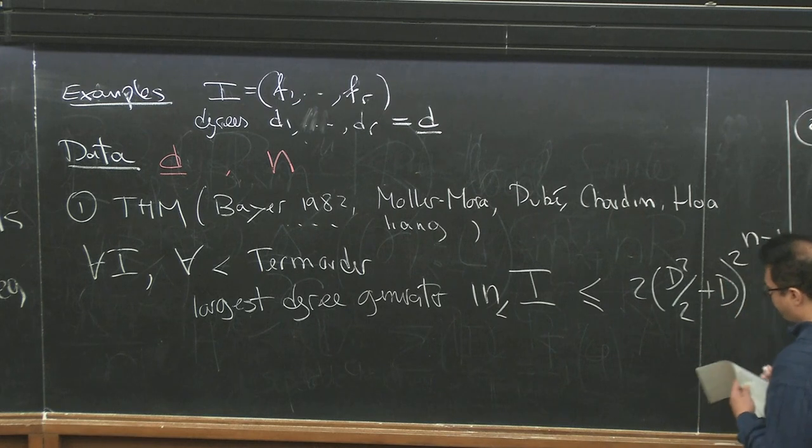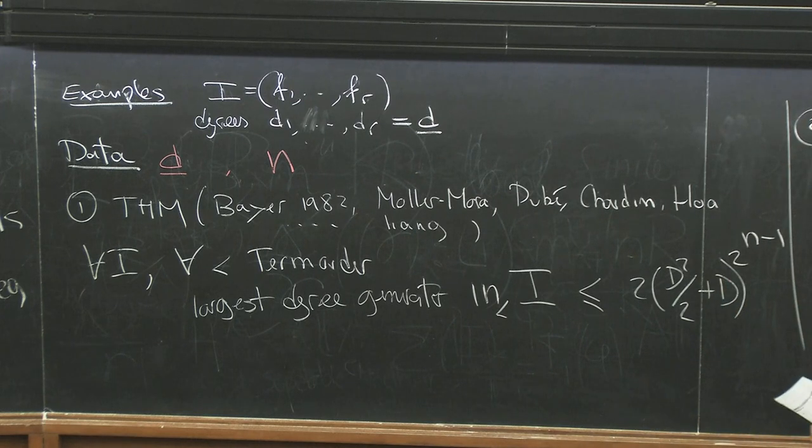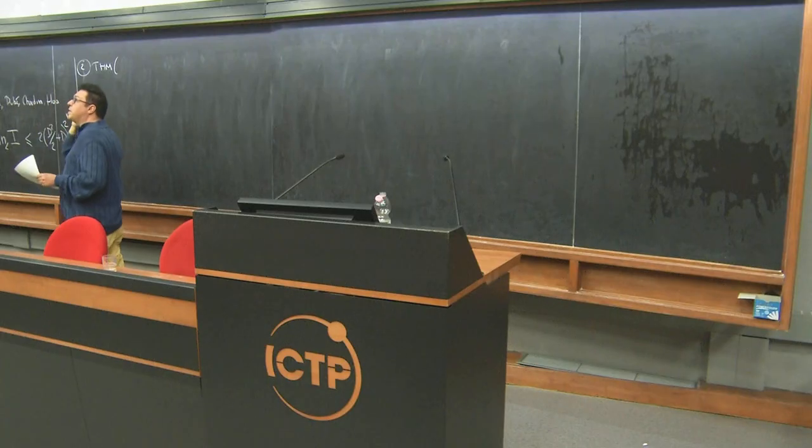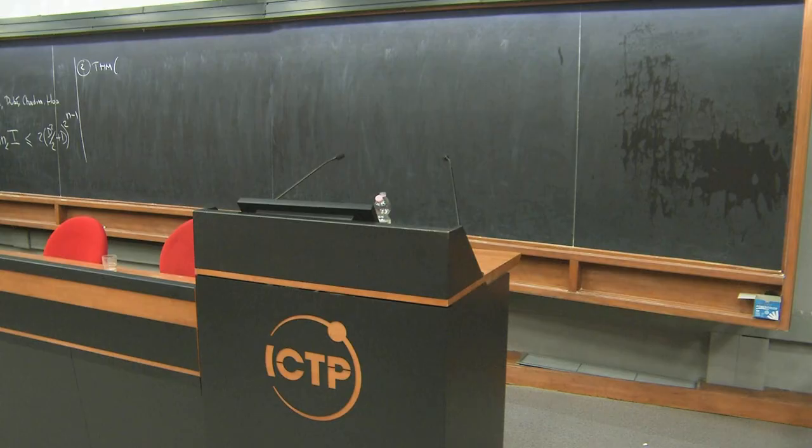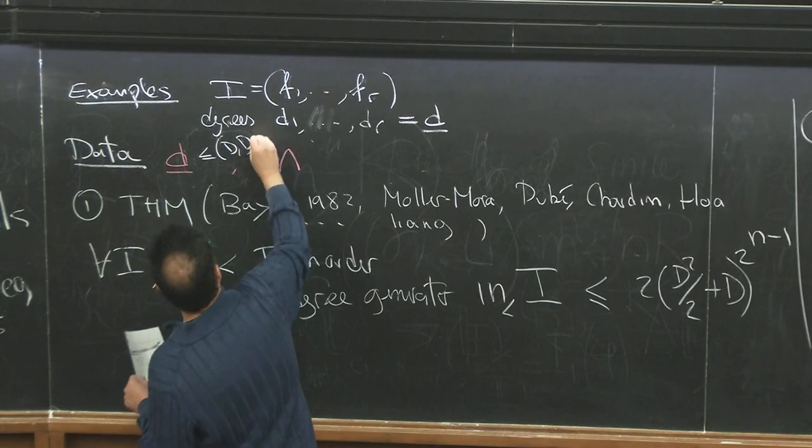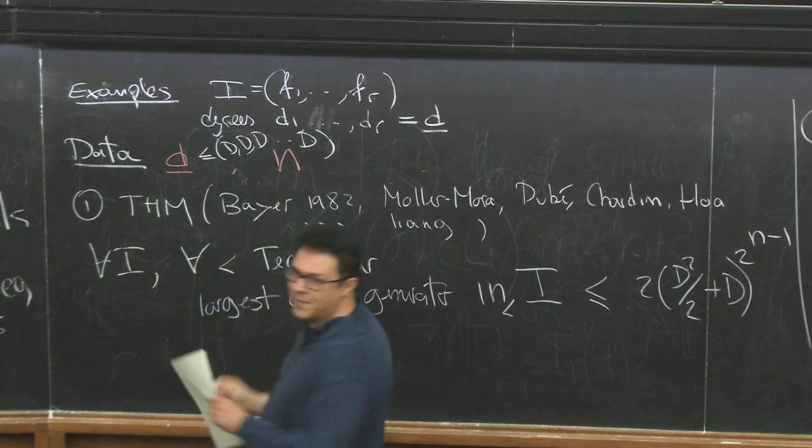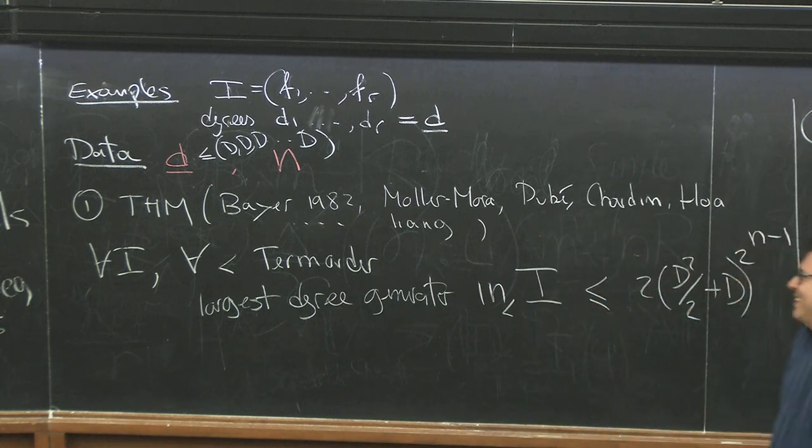Example number 2: Castelnuovo-Mumford regularity. So theorem of—what is capital D? The capital D? You're right, so little d, let's say smaller than D, the largest. Thank you.